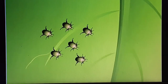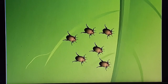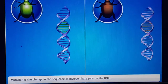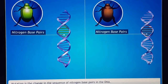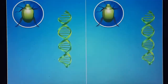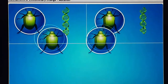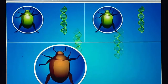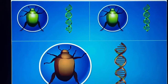A green beetle population turning into brown beetles through an evolutionary change is called a mutation. A mutation is a change in the sequence of nitrogen-based pairs in the DNA. A mutation in the gene for green coloration in green beetles leads to offspring with brown coloration.